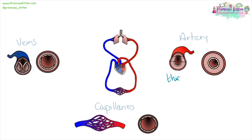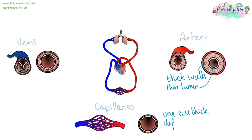Arteries have very thick walls because they are carrying blood under high pressure, which means they have a thin lumen — that's the gap in the middle. Capillaries are very, very small — they are only one cell thick — to allow for diffusion. They generally go around in a mesh network around things like the gut, around the villi in the gut, around the alveoli in the lungs, so they have a large surface area. Veins carry deoxygenated blood and carry it back to the heart, so they have valves. They have thin walls and a thick lumen because they're carrying blood under low pressure.